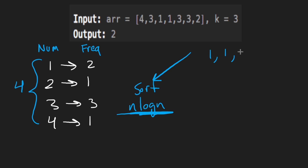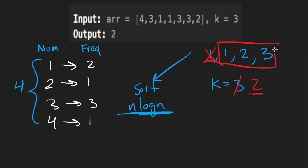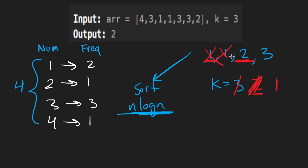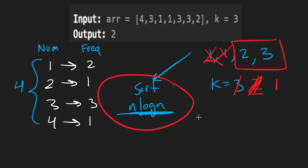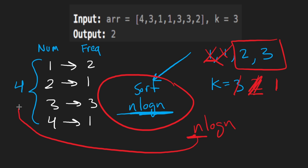Walking through the sorted frequencies [1, 1, 2, 3] with K equals three: we remove the first element (frequency 1), K becomes two, result becomes three. We remove the second element (frequency 1), K becomes one. We try to remove the next element (frequency 2), but K equals one isn't enough. So we end up with two elements remaining. This is a valid O(n log n) approach in the worst case, since the number of distinct integers could equal the input array size.